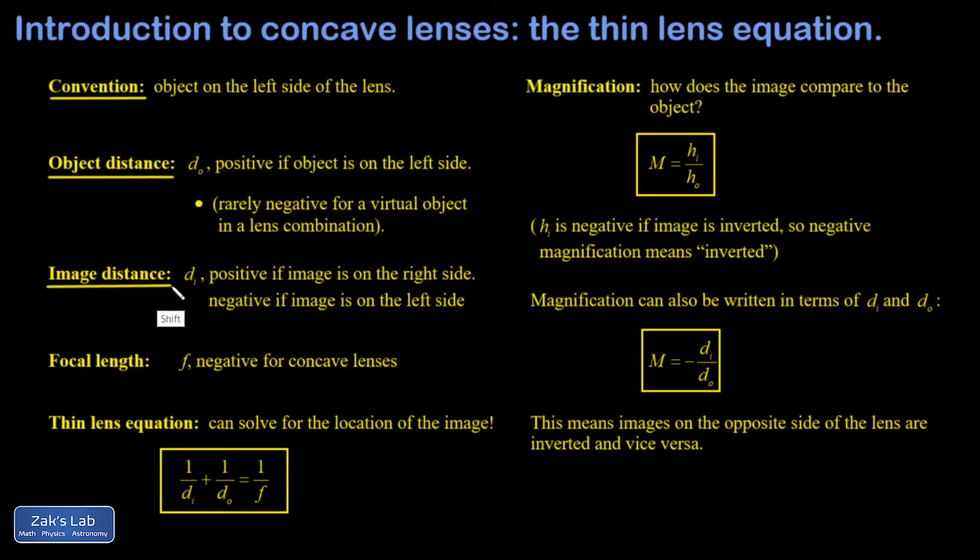Image distance. Positive if your image is on the opposite side of the lens or the right side of the lens. Negative if it's on the same side as the object. So for diverging lenses, our image distance is going to turn out to be negative. The focal length for a diverging lens by convention is negative. Finally, the image distance, object distance and focal length are related by the thin lens equation. One over d_o plus one over d_i is equal to one over f.